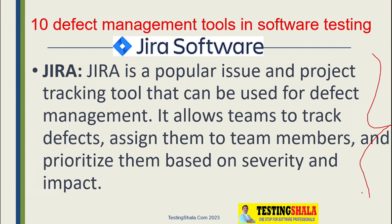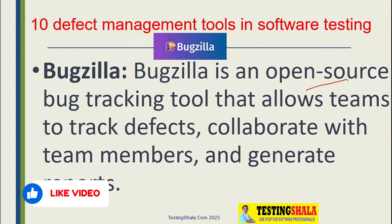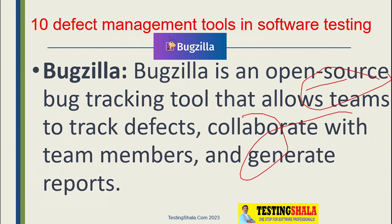The second type of tool is Bugzilla. Bugzilla is an open source tool which we use to track defects. We can also collaborate with various team members using Bugzilla, and we are capable of generating reports as well.